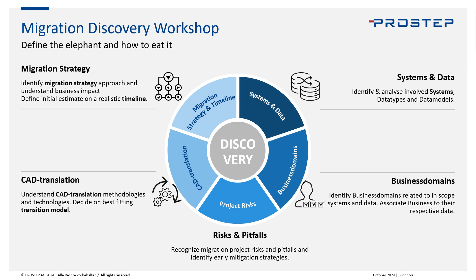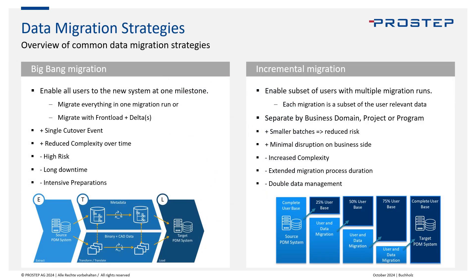In today's session we want to focus on migration strategy. I've brought four data migration strategies. The first one is Big Bang migration. Most people think it means moving all the data into the new system at once, but it actually means enabling all users at one milestone in the new system. Data can be moved as one large migration or as a front-load plus delta migration.